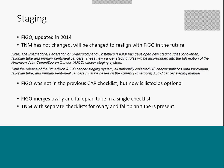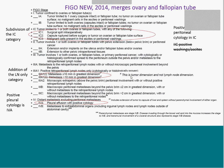Moving on to staging — FIGO has updated its staging system in 2014. However, TNM has not changed but will be changed to realign with FIGO in the future. The protocol states that until the release of the 8th edition of the AJCC staging system, the definition of the primary should be based on the AJCC 7th edition staging manual. One change in the current CAP checklist is that FIGO was not in the previous checklist but is now listed as an optional staging system. In this system, FIGO merges ovary and the fallopian tube, whereas the TNM uses separate checklists for ovary and the fallopian tube.